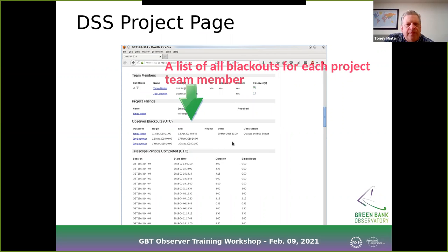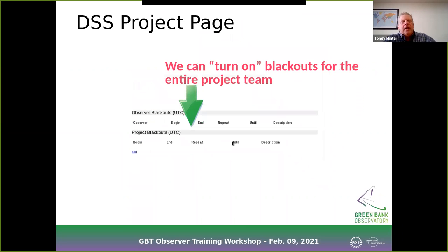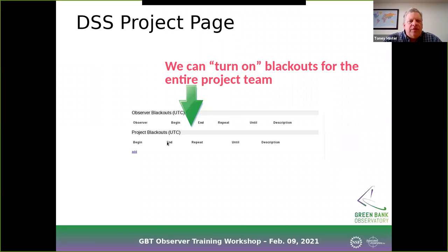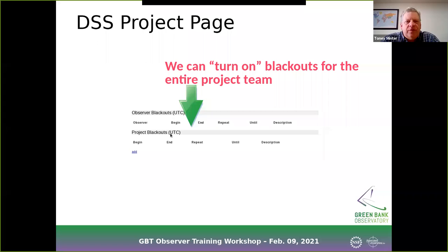There's another feature called project blackouts. Observer blackouts mean the project can be scheduled as long as at least one observer is available. But with project blackouts, the whole project must be available to be scheduled — it's a yes/no on the project rather than a maybe. If the project blackout is active, the project can't be scheduled at all during that period. This can be used for certain monitoring observations that aren't guaranteed specific periods on the telescope schedule.